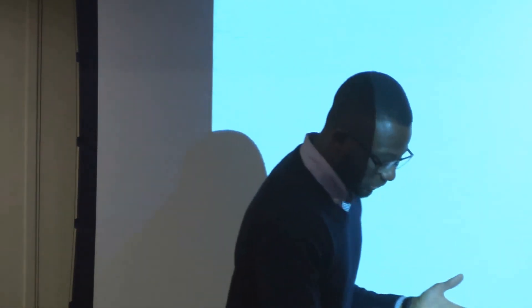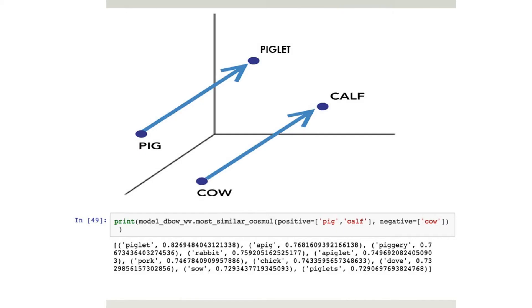Now a typical Word2Vec question: cow is to calf as pig is to - who wants to guess? The audience said 'piglet' - correct! And just to prove I didn't make that up, here's the code too. Pig is to calf as cow is to piglet. For some reason 'chick' also comes up - I don't know why.